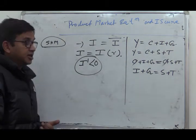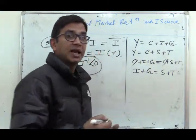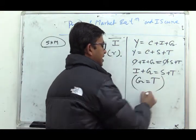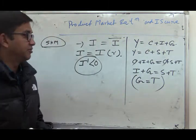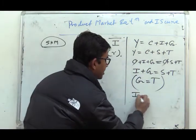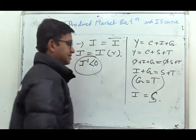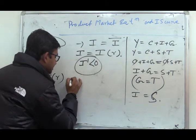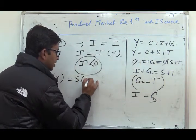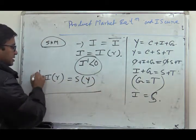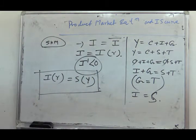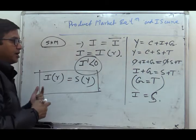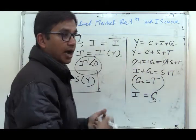If we further consider that the government budget is balanced — that means G, government expenditure, is exactly equal to tax revenue T — then we can find that I will be equal to S. So private investment, which is a function of rate of interest, and savings, which is a function of income, gives us the equilibrium condition in the commodity market. From here we can find out the famous IS equation.